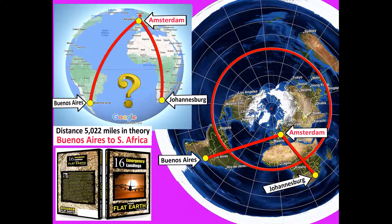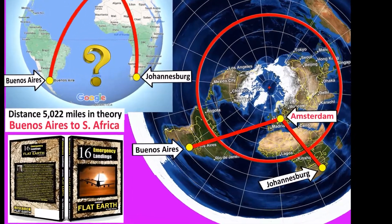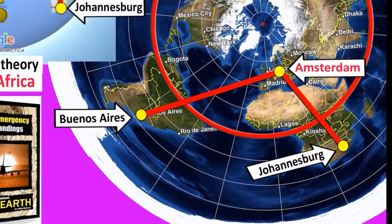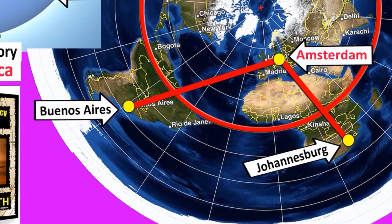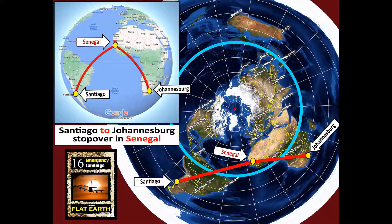Another example: a flight from Buenos Aires to Johannesburg with a stopover in Amsterdam, Holland in Europe — because the Earth is flat, it's an extended plane. You can see on the flat Earth map why they have to cross the equator two times. The last one: a flight from Santiago to Johannesburg with a stopover in Senegal in Africa. Again, they have to cross the equator two times. When you look at the flat Earth map, you can understand why.